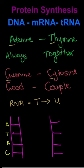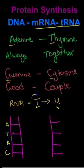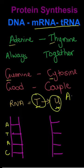Adenine bonds with thymine — always together. Guanine and cytosine are a good couple. But with RNA, thymine is replaced with uracil, so it will be adenine and uracil.